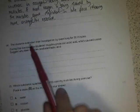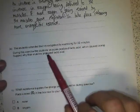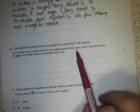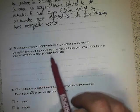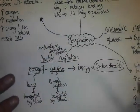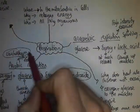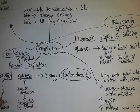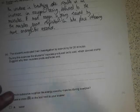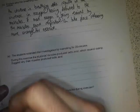The students extended their investigation. During this exercise, the students' muscles produced lactic acid, which caused cramp. Suggest why their muscles produced lactic acid. So this is trying to ask you the idea of the person in this investigation switching from low to high intensity exercise — not enough oxygen is getting there, which means they are respiring anaerobically.